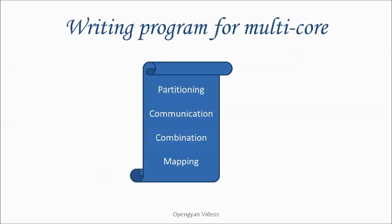Then comes the communication part. The tasks generated by the partition are intended to be executed concurrently, but they cannot in general be executed independently. The computation to be performed in one task will typically require data associated with another task. Data must then be transferred between tasks to allow the computation to proceed. This information flow is specified in the communication phase of the design.